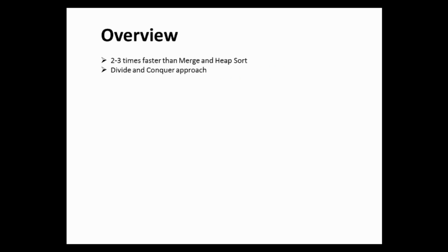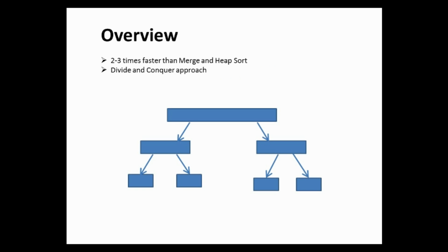Secondly, it is a divide and conquer approach, which means we are dividing a problem into sub-problems recursively until it becomes so small that it can be solved directly. Third, we choose an element from the list called the pivot, and the partitioning is based on that pivot.